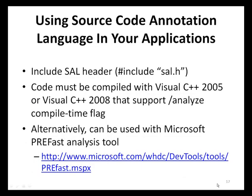To use the source code annotation language in C or C++ applications, the first requirement is to include the sal.h header file, which contains all the macros required to use the source code annotation language. The second requirement is that applications must be compiled with versions of Visual Studio that support the /analyze compile-time flag. The source code annotation language can also be used with Microsoft PreFast, a standalone static code analysis tool distributed with the Microsoft Device Driver Kit.